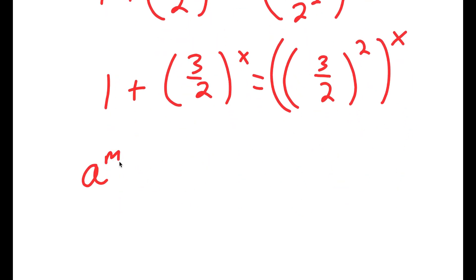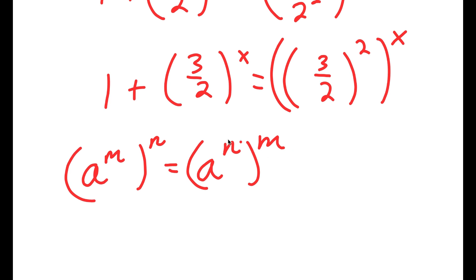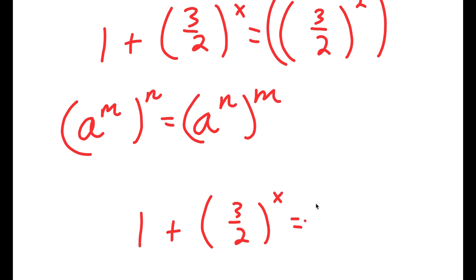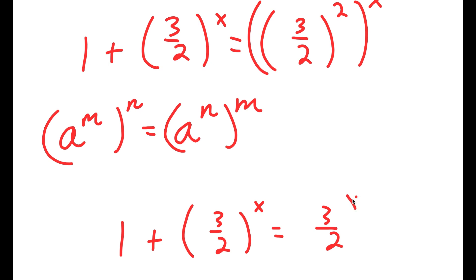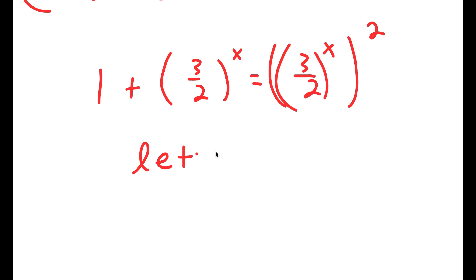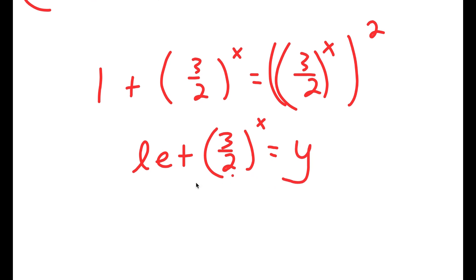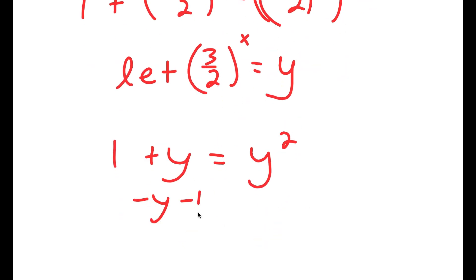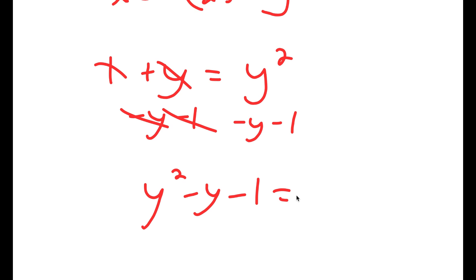And if I have something in the form a to the power of m to the power of n, this is the same thing as a to the power of n to the power of m. So this becomes 1 plus 3 over 2 to the power of x equals 3 over 2 to the power of x, to the power of 2. Now I'm going to let 3 over 2 to the power of x equal the variable y. So I get 1 plus y equals y squared, and subtracting y and 1 from both sides, I get y squared minus y minus 1 equals 0.